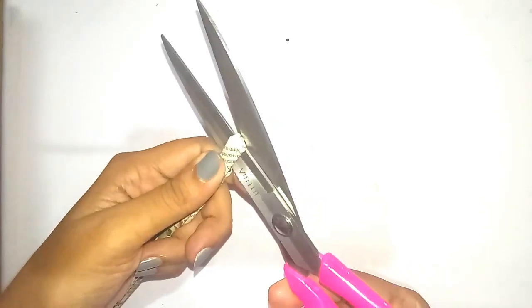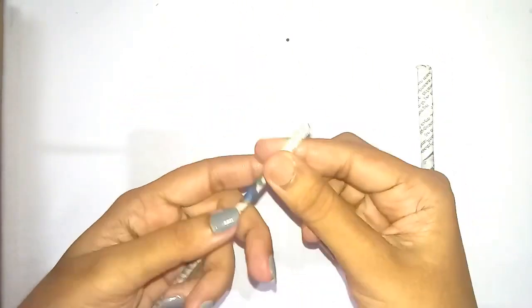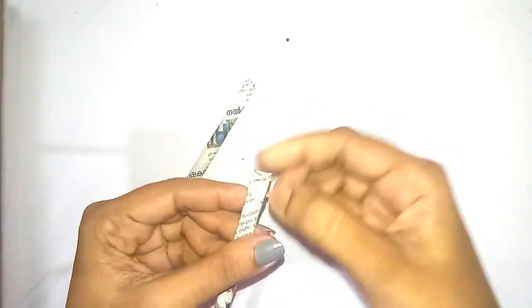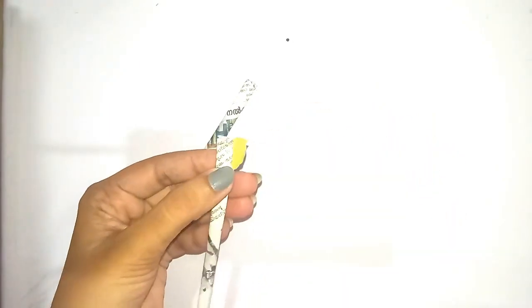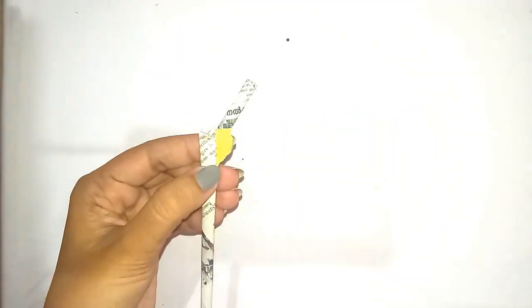After cutting the paper tube, sometimes from the edges paper may come out. Just check whether the paper is coming out. If it's coming out, apply some glue and stick it properly.